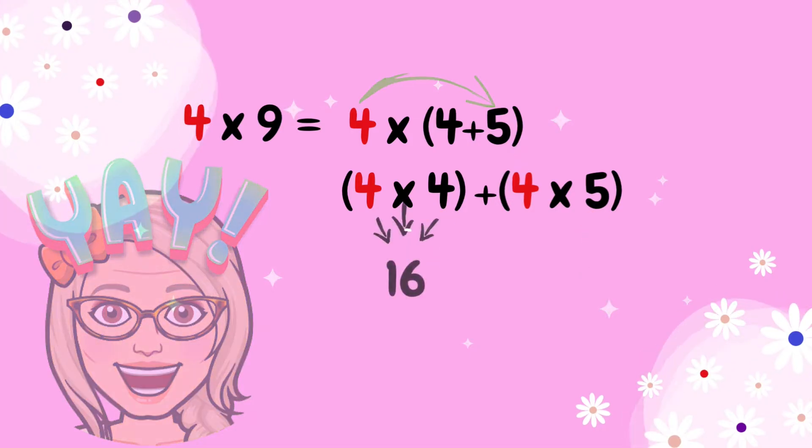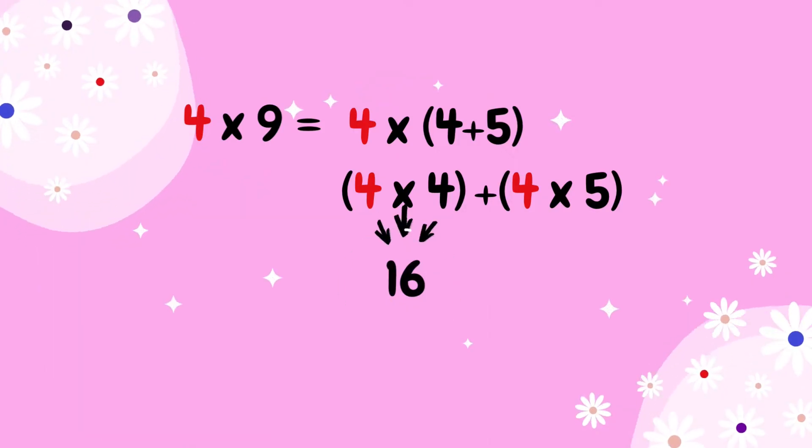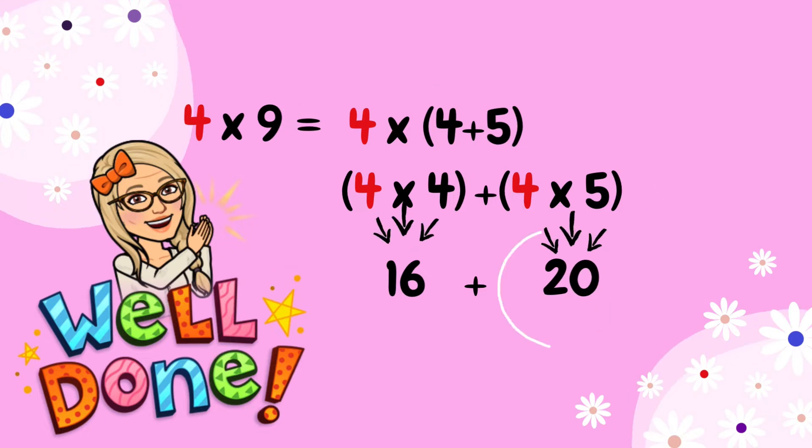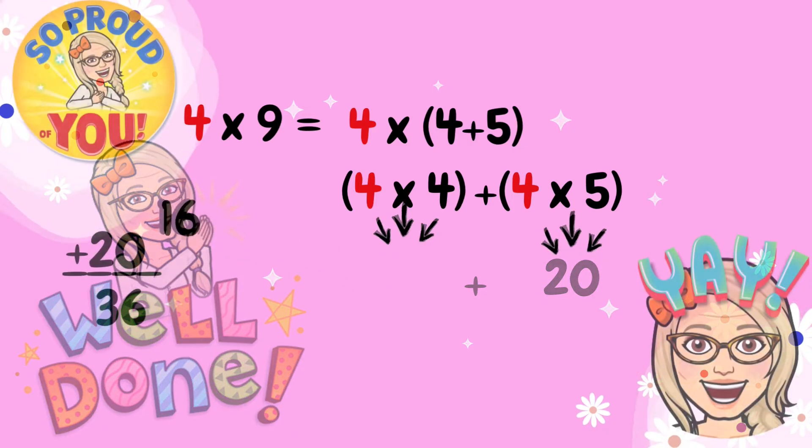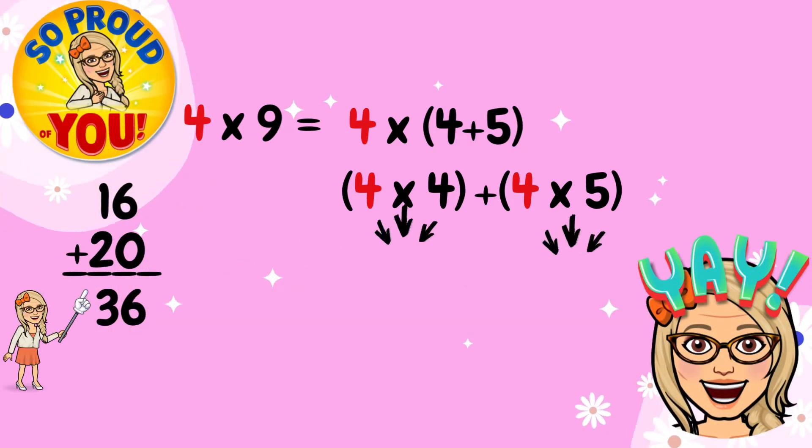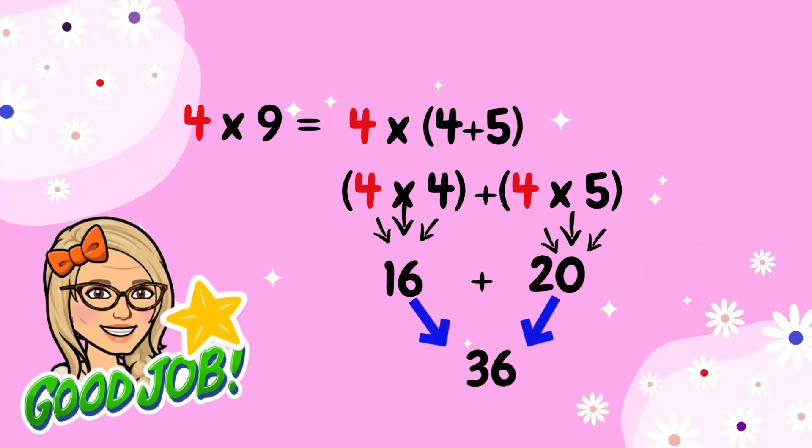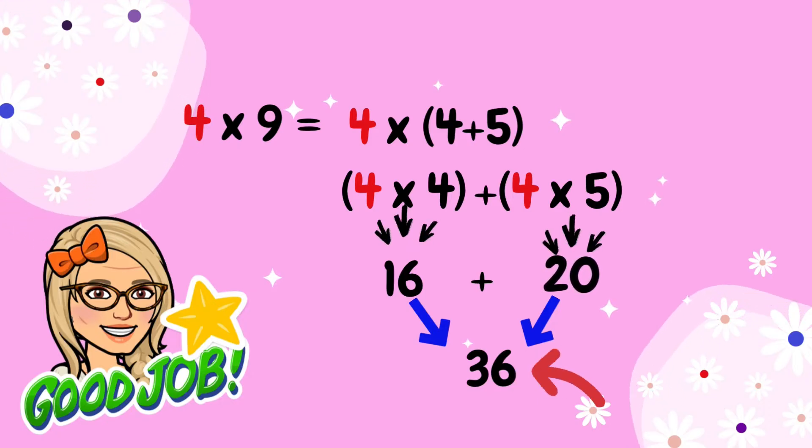Next we are going to multiply 4 times 4 equals 16. We are going to keep the plus sign and then we are going to multiply 4 times 5 which is 20. The next step will be adding the value of these two products, 16 and 20. And the answer for that is 36. This will be my final answer. 36 is the total for this multiplication sentence. So, 4 times 9 equals 36.